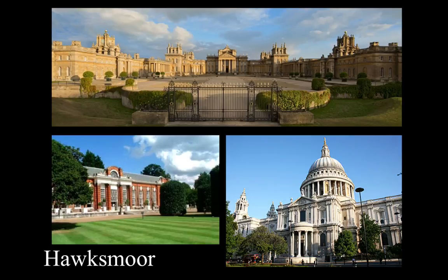In the 1700s, Nicholas Hawksmoor designed a completion plan for the Western Towers of Westminster. Hawksmoor was unschooled in architecture but had extreme success and fame as an architect due to his raw talent and brilliant mentors, one of which was Sir Christopher Wren. He worked alongside Wren on St. Paul's Cathedral in London, Oxford Shires, and Blenheim Palace, as well as supervising the Orangerie as Clerk of Works at Kensington Palace.